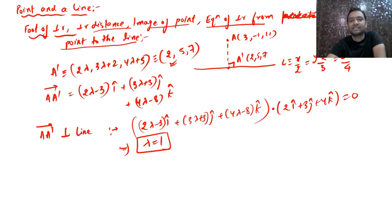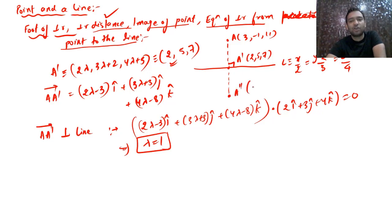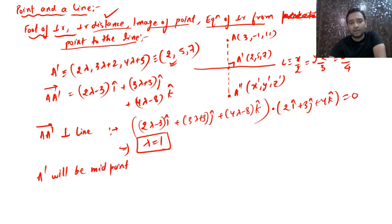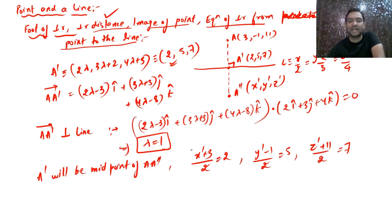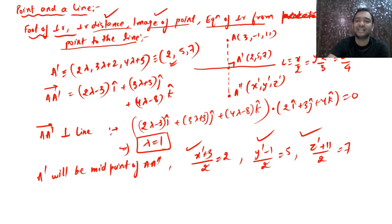The perpendicular distance is found by applying the distance formula between A and A'. For the image of the point, let the image be A'' with coordinates (x', y', z'). Since A' is the midpoint of AA'', using the midpoint formula: (x'+3)/2 = 2, (y'−1)/2 = 5, (z'+11)/2 = 7. This gives us x', y', z' and hence the image point.